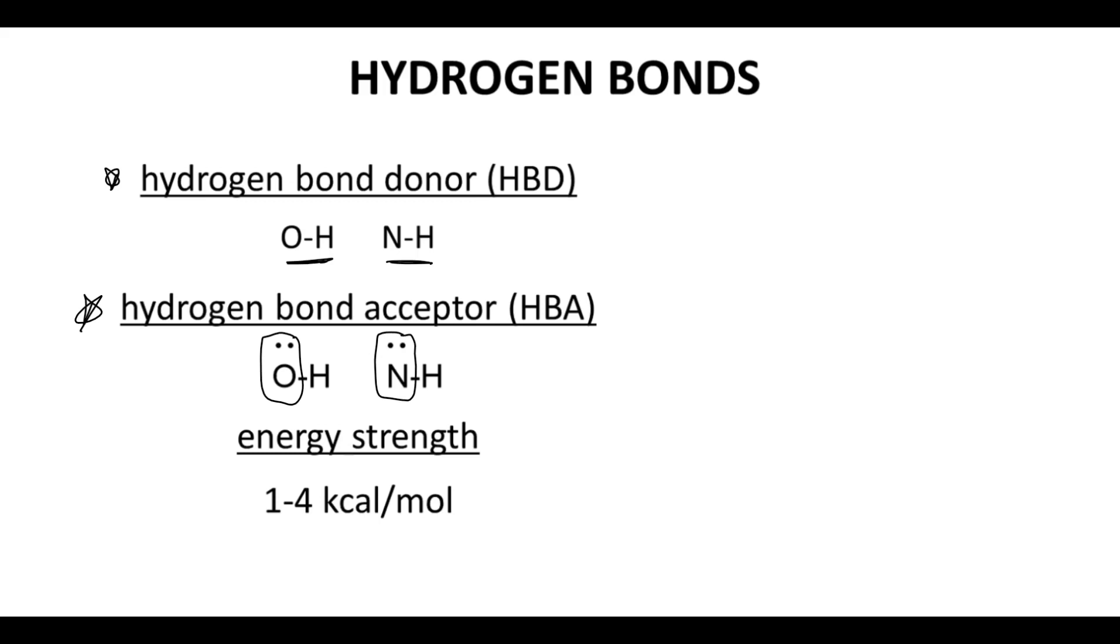A single hydrogen bond is worth anywhere from about 1 to 4 kcals per mole towards the binding energy. Hydrogen bonds between neutral hydrogen bond donors and acceptors, like an alcohol OH and a neutral ketone oxygen, tend to be weaker at about 1 to 2 kcals per mole.